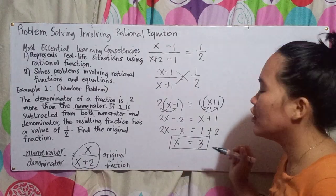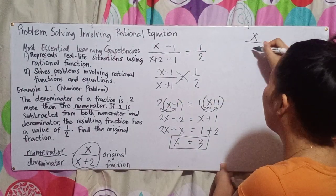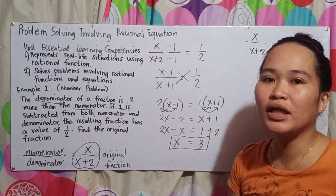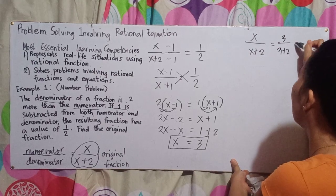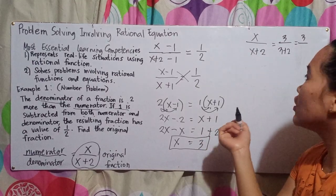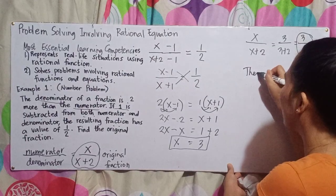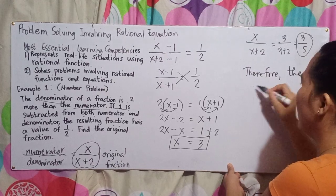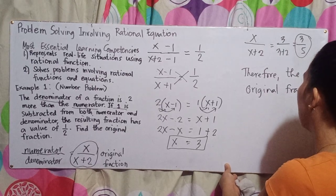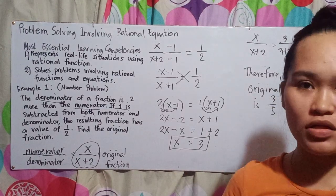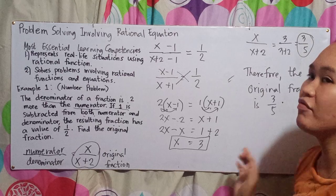The value of our variable x is positive 3. Since the original fraction is x over x plus 2, we substitute 3: 3 over 3 plus 2 equals 3 over 5. Therefore, since this is problem solving, the original fraction is 3 fifths.